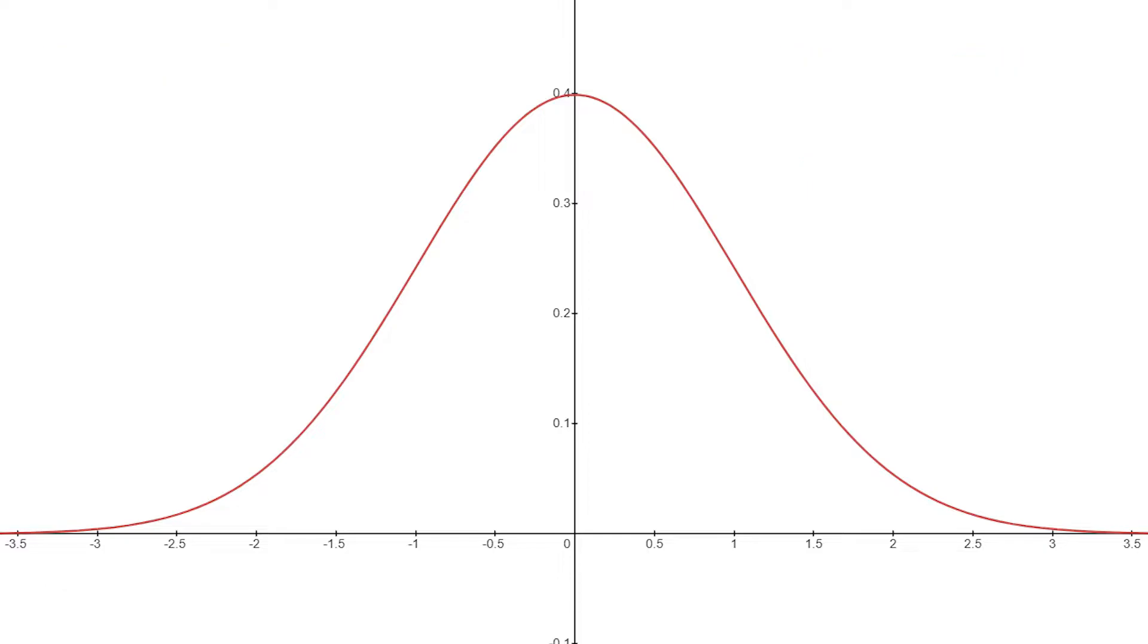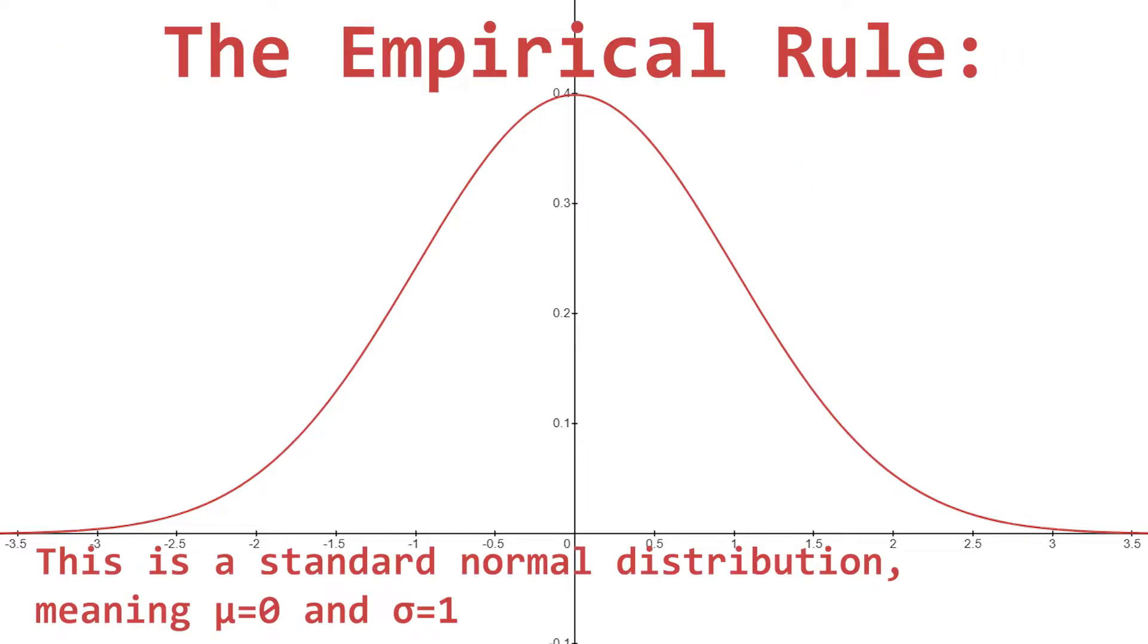In statistics, there's this rule called the empirical rule, which says that in a normal distribution, approximately 68% of the data falls between one standard deviation below and above the mean, 95% for two standard deviations and 99.7 for three standard deviations.